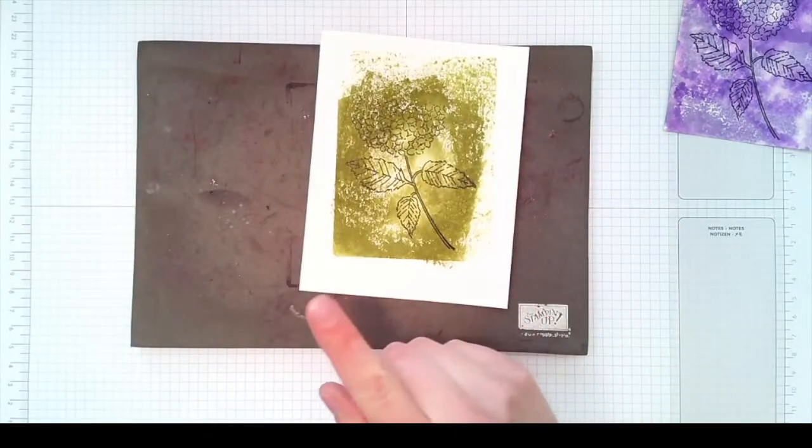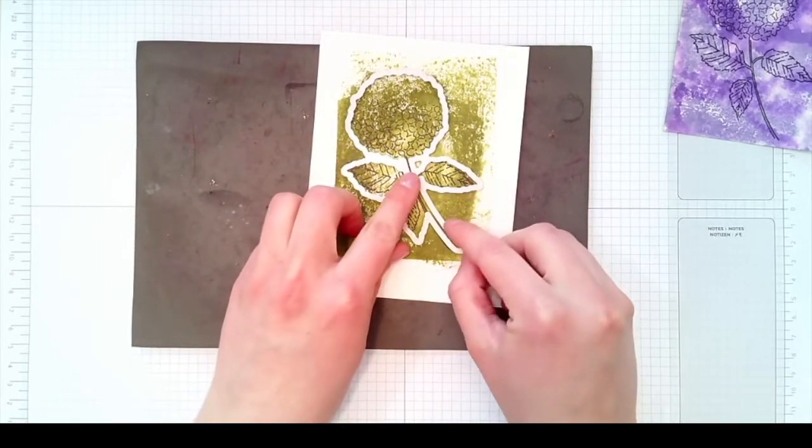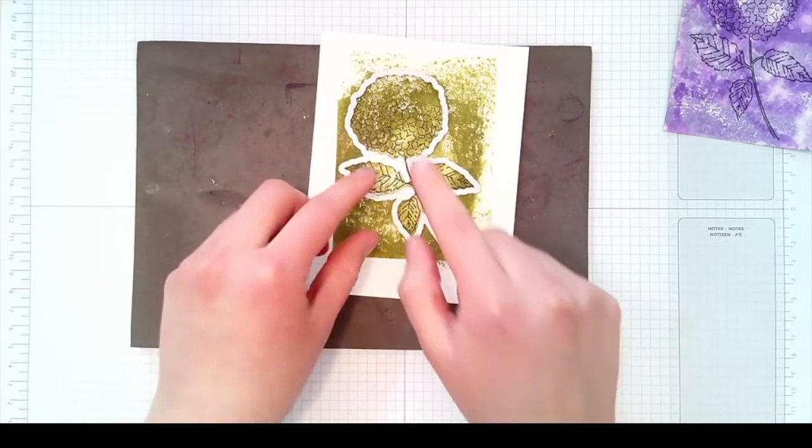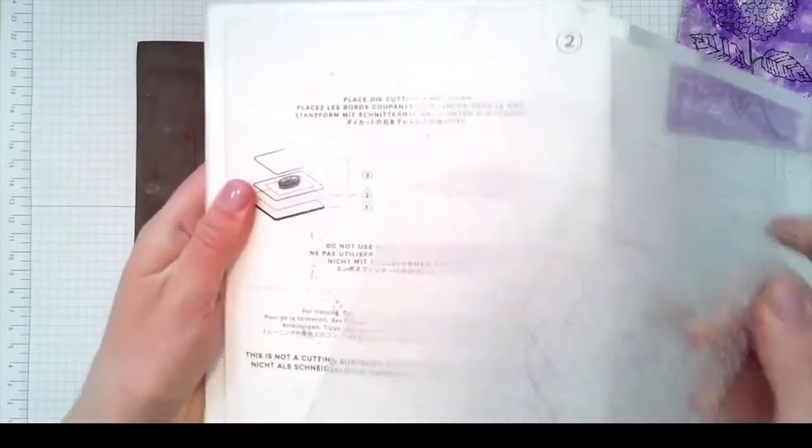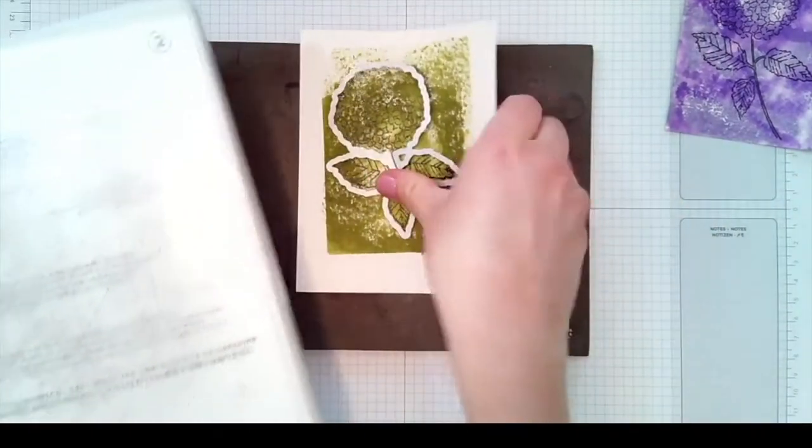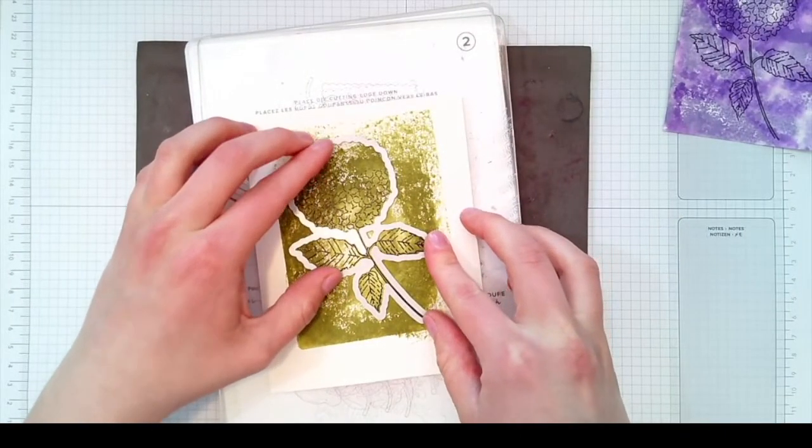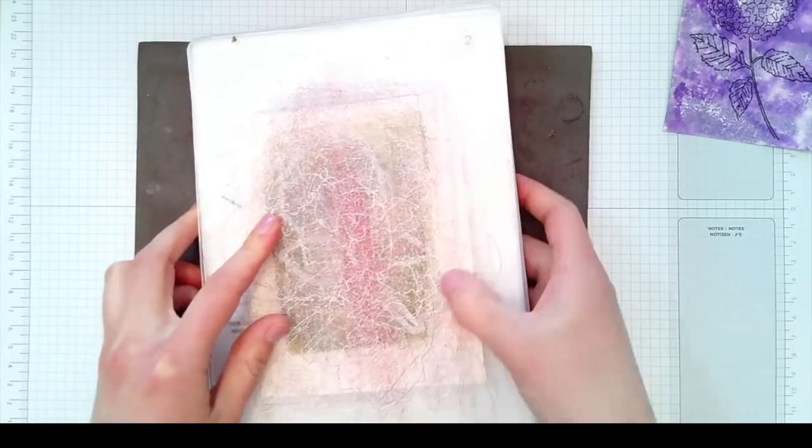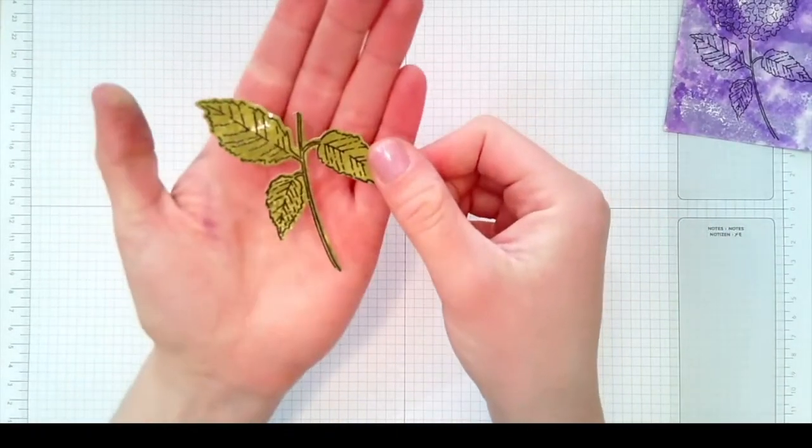I'm gonna take the hydrangea die and we are gonna die cut this. Then we'll just take a pair of scissors and cut off right there so we'll just have the stem part that we need for the card. Take your die cutting machine platform, you'll have the number one, number two, the plexiglass would be your number three layer, and then your cardstock and dies. Put your second plexiglass plate over top and run that through the big shot.